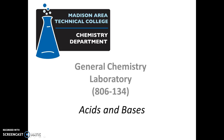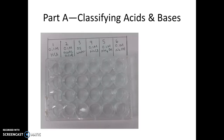This video discusses the procedure for the acids and bases experiment for general chemistry at Madison College. For the first part of this experiment, you're going to be classifying the properties of six different solutions.